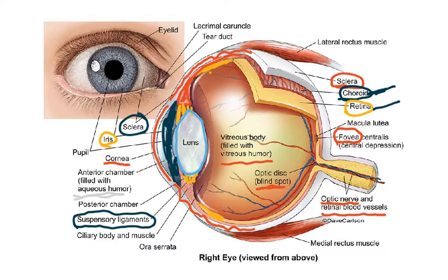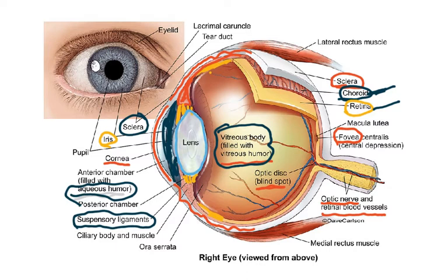The lens divides the eye into two chambers. The front is the anterior chamber, containing the fluid called aqueous humor. The back contains the gel-like vitreous humor, which maintains the shape of the eye. The colored part of the eye is the iris — some people are brown, some are green — and the dark spot in the center is called the pupil.